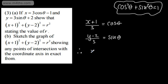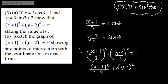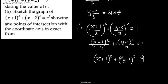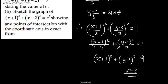So (x+1)²/9 + (y-2)²/9 = 1. Multiplying through by 9: (x+1)² + (y-2)² = 9. This is the equation of a circle with centre (-1, 2) and radius R = √9 = 3.